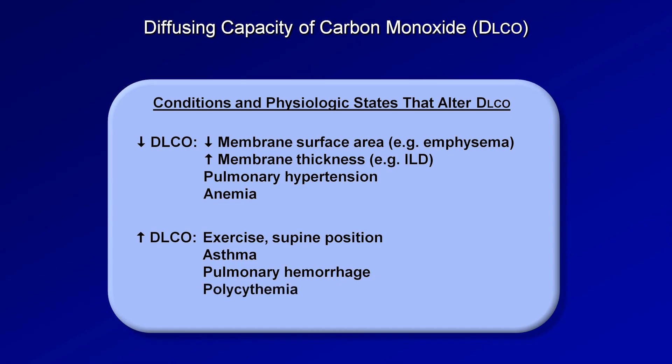Polycythemia helps to increase the local partial pressure gradients, as an opposite effect to that of anemia. Finally, mild left heart failure, in which there is increased left-sided pressures but with preservation of cardiac output, can result in an increased DLCO as a consequence of increased pulmonary blood volume. Obesity is occasionally listed among the causes of an elevated DLCO; however, the actual scientific literature on the effect of obesity on the DLCO is inconsistent.